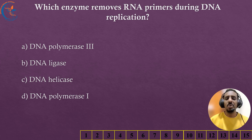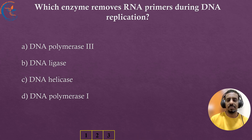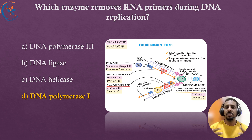The next question: which enzyme removes RNA primers during DNA replication? The correct answer is DNA polymerase I. DNA polymerase I has 5' to 3' exonuclease activity, allowing it to remove RNA primers and replace them with DNA.